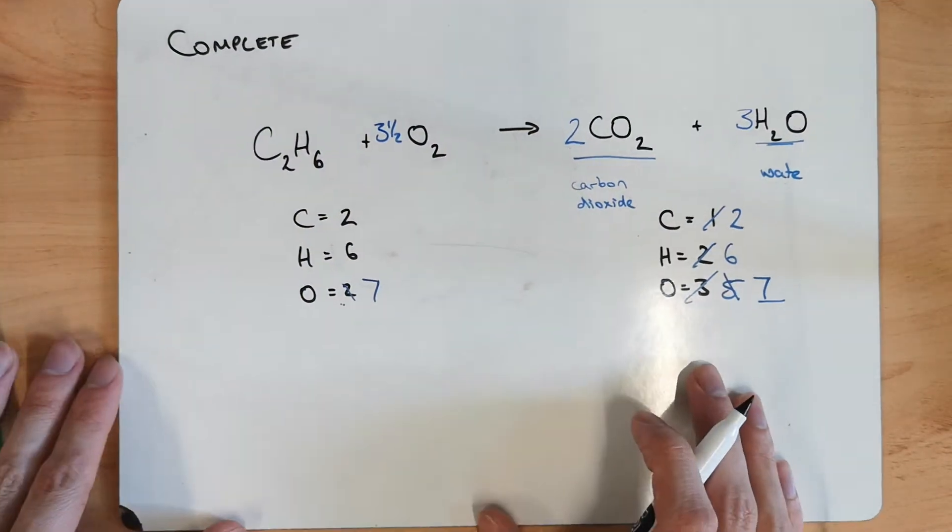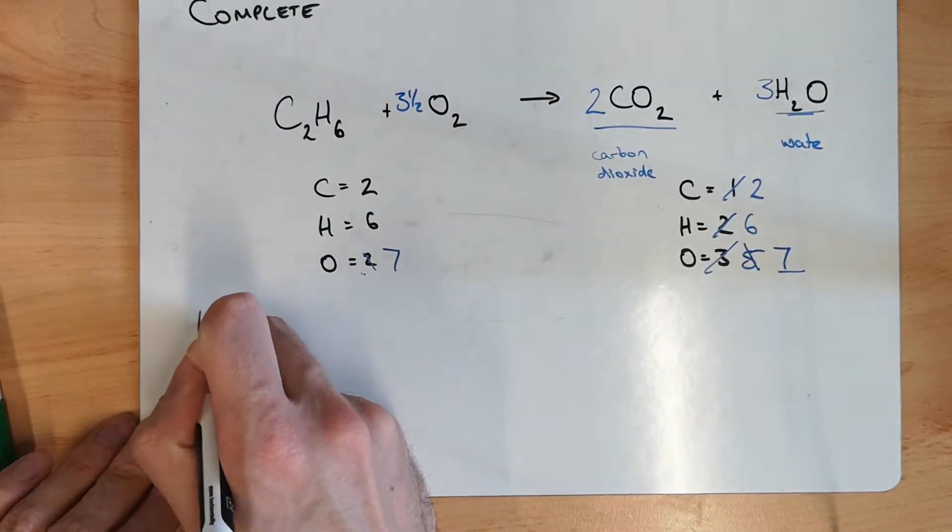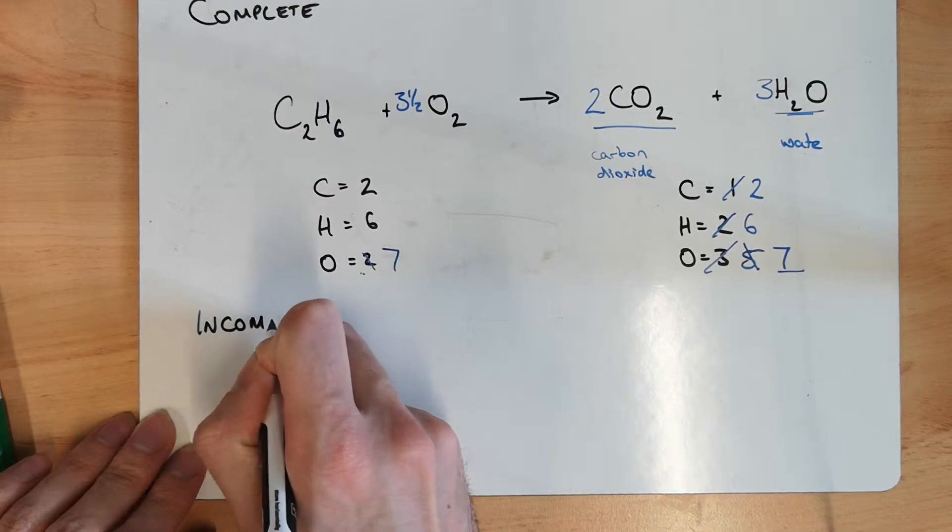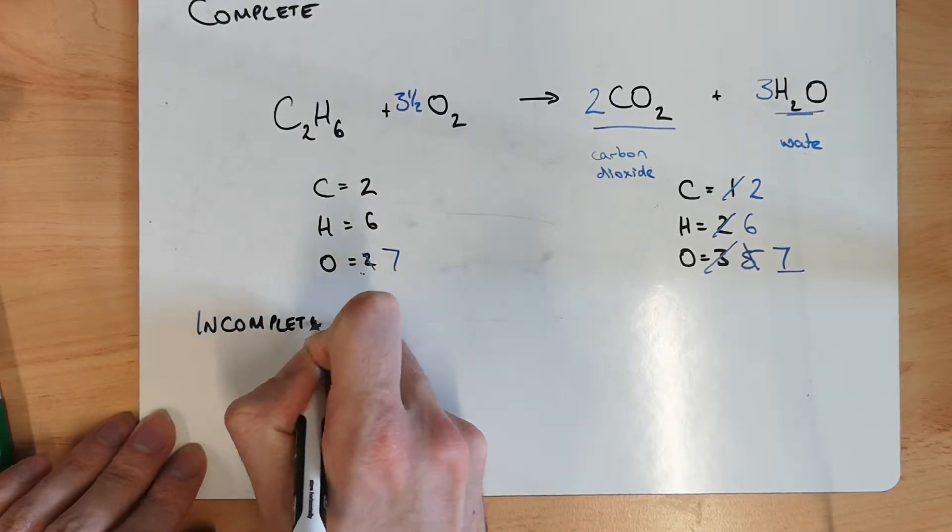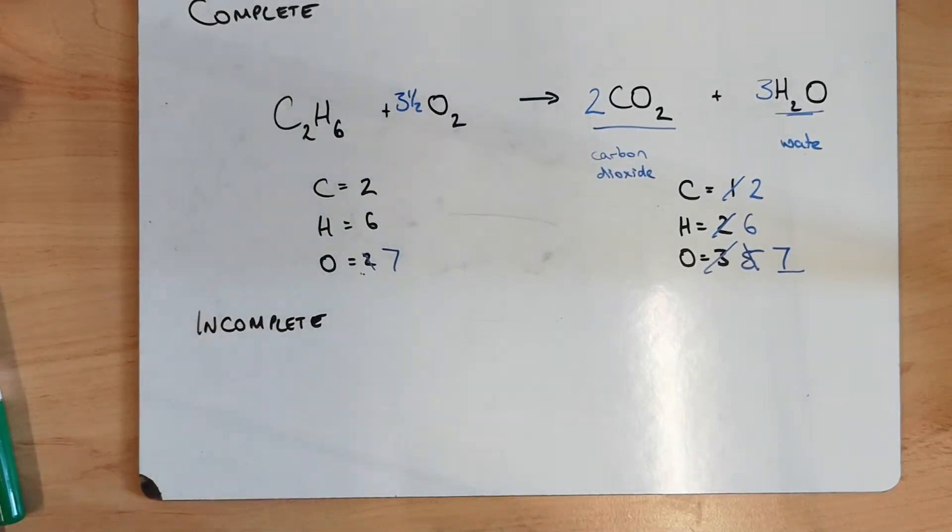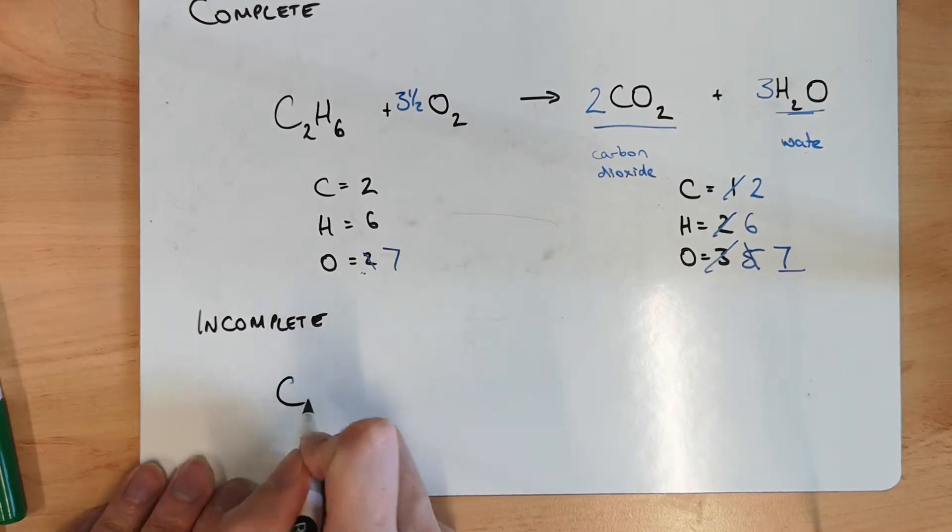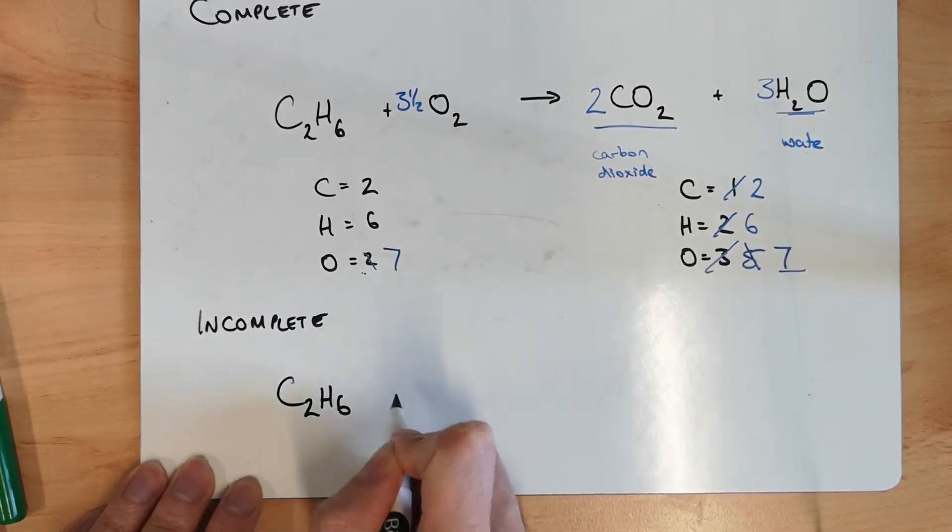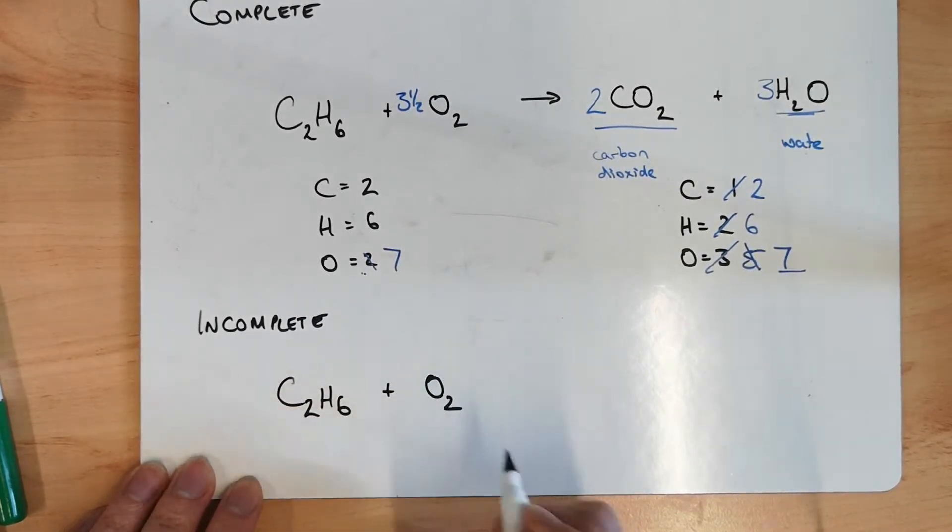The alternative to this is known as incomplete. And as I said earlier. This happens when we've got a lack of oxygen. So. C2H6. And it's combustion. So it's still going to react with oxygen.